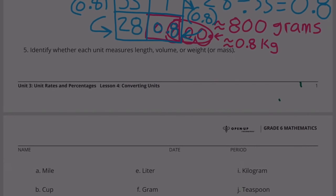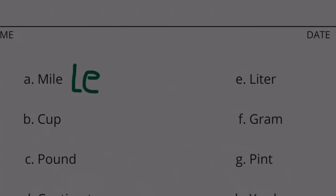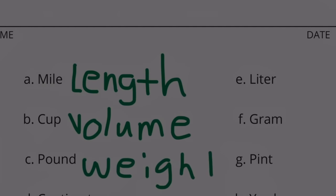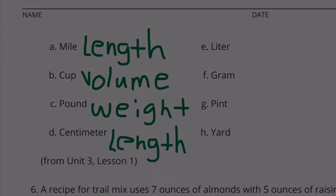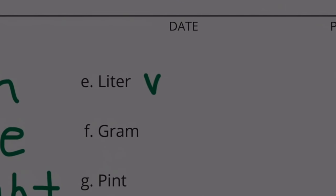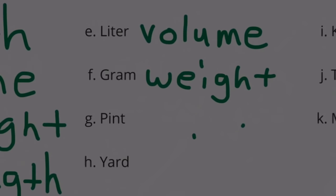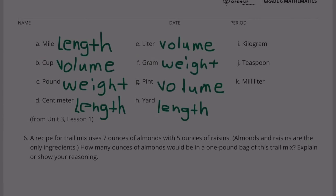Number 5: Identify whether each unit measures length, volume, or weight. A mile - that's length. A cup - that's volume. A pound - that's weight. A centimeter - that's length. A liter - that's volume. A gram - that's weight. A pint - that's volume. A yard - that's length. A kilogram - that's weight. A teaspoon - that's volume. A milliliter - that's volume.